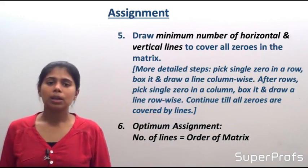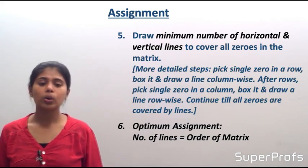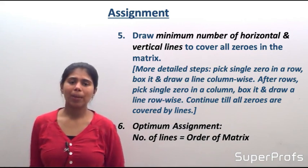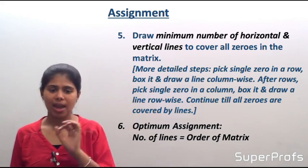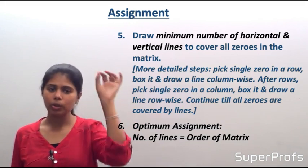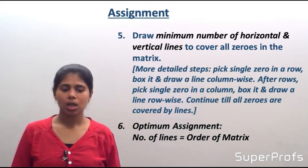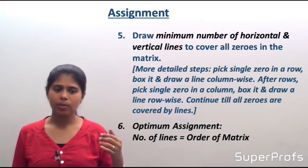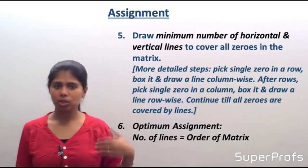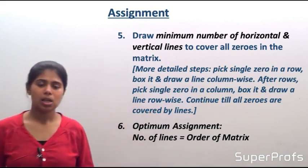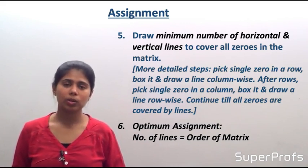Then we draw the minimum number of horizontal and vertical lines to cover all the zeros in the matrix. To do this, we pick a single zero in a row, box it, and draw a line column-wise. After finishing the rows, we pick a single zero in a column and draw a line row-wise. We continue this process until all zeros are covered.